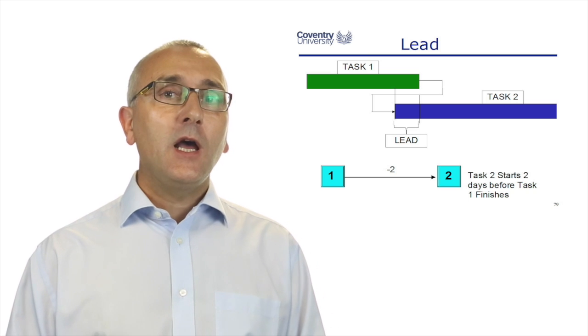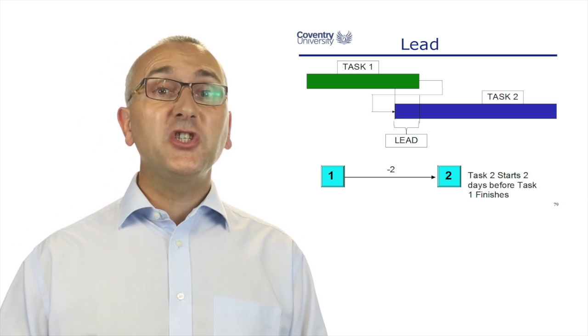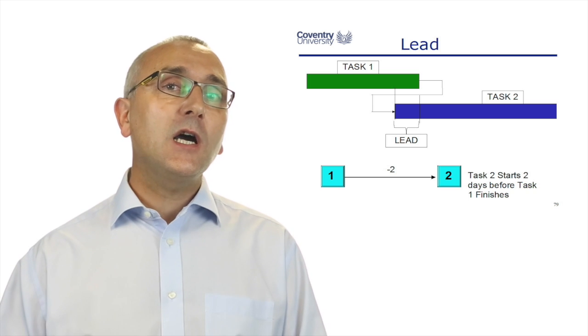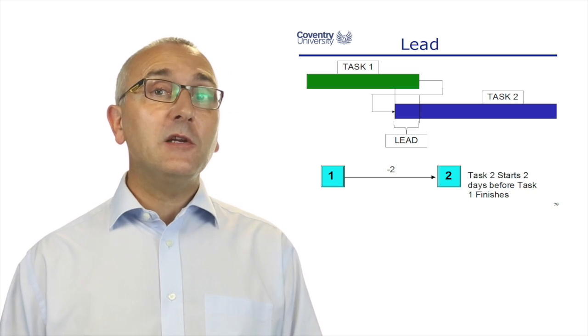Some examples of this. If task one is producing some castings that are machined in task two, we can start to machine the first casting before number five casting has been completed.